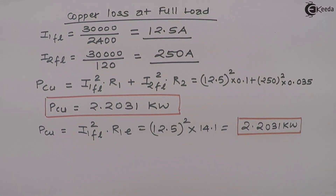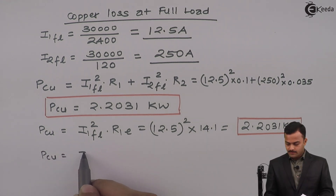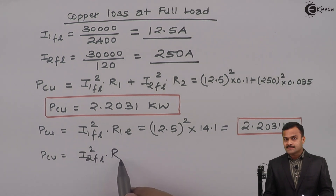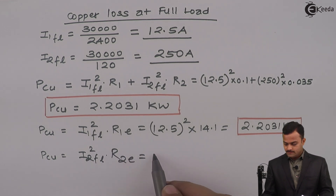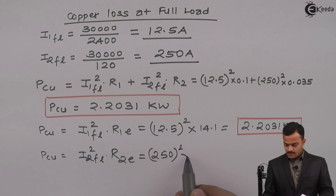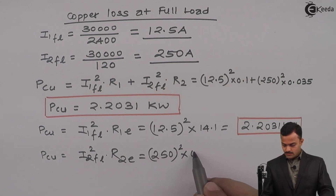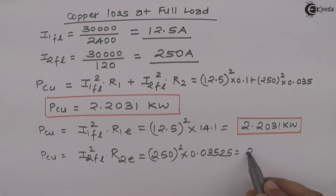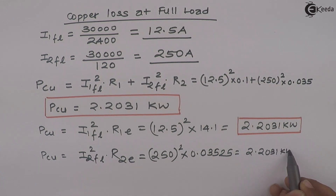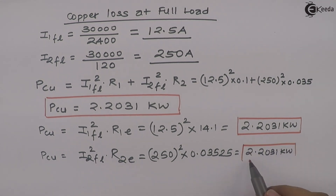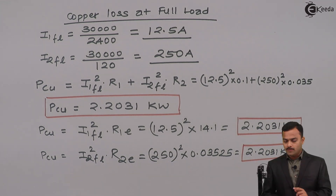Similarly, using the circuit referred to the secondary side: copper loss = I2FL² × R2E = 250² × 0.03525 = 2.2031 kilowatt — once again the same answer. Depending on whatever parameters are given, use the appropriate formula to get copper loss. Thank you.